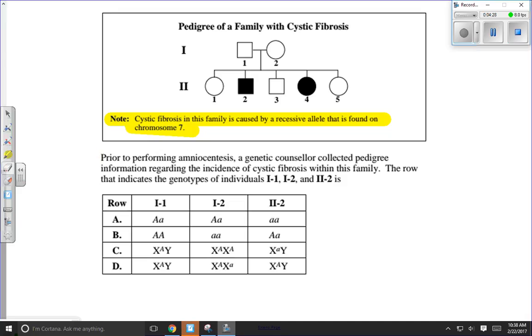So let's take a look at what the question is actually asking. Let me fix that. Head back to normal here. There we go. Prior to performing amniocentesis, a genetic counselor collected pedigree information regarding the incidence of cystic fibrosis within this family. The row that indicates the genotypes of individuals 1-1, that would be 1-1, 1-2, and 2-2 is.